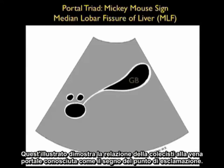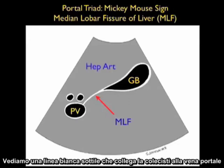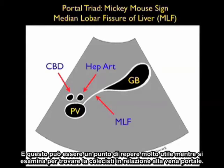Here's an illustration showing the relation of the gallbladder to the portal vein, known as the exclamation dot sign. The exclamation is made up by the gallbladder and the dot is the portal vein. We see a thin white line connecting the gallbladder to the portal vein known as the median lobar fissure of the liver, which can be a very helpful landmark as one looks to find the gallbladder in relation to the portal vein.